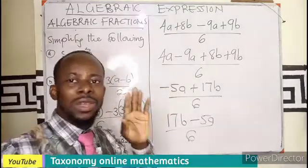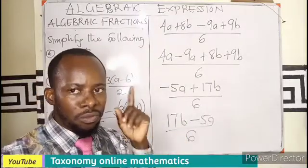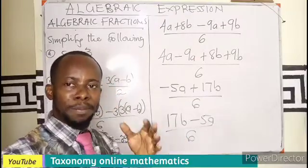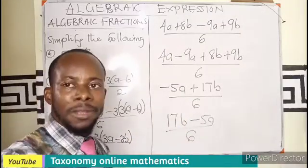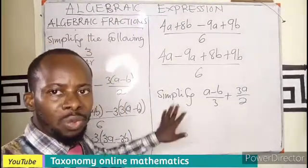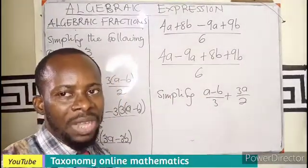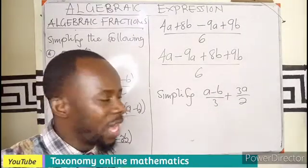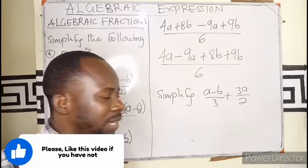So if you have any algebraic fractions that involve the denominator to be a monomial, a single term, first find the LCM, second express each of the fractions in terms of the LCM, then you simplify. So with all this being true, we have simplify (a minus b) over 3 plus 3a over 2. I believe at this point you can be able to simplify that. If you are able to simplify that, then send the answer to the comment section. Let's learn together.